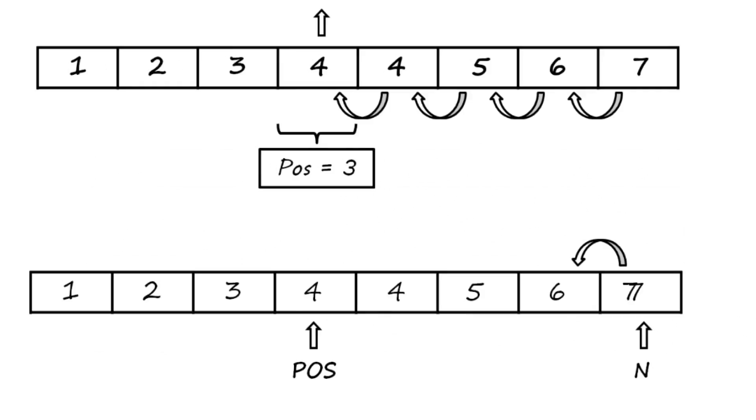Now as we analyzed shifting of elements in the previous video, we'll do the same here. There are two ways of shifting: either start from n and move towards pos, or start from pos and move towards n. As you can see, if we start from n, you'll end up having 7 at each position. But if we start from pos, it will serve the purpose. So we'll start shifting our elements from pos and end at n.